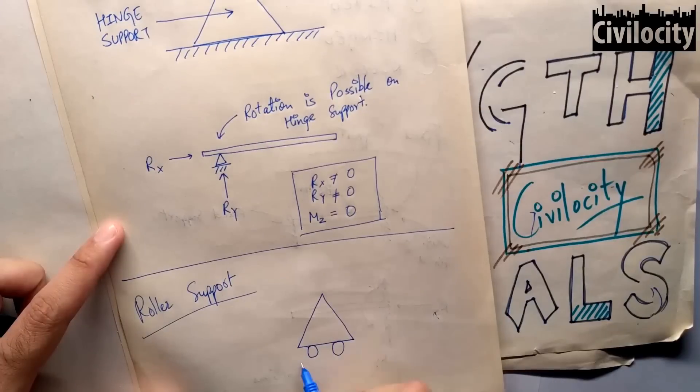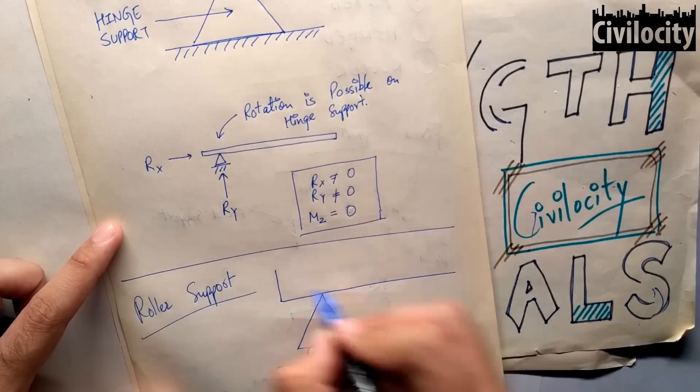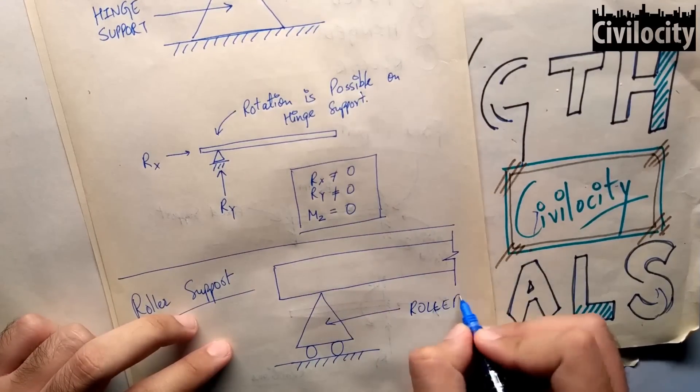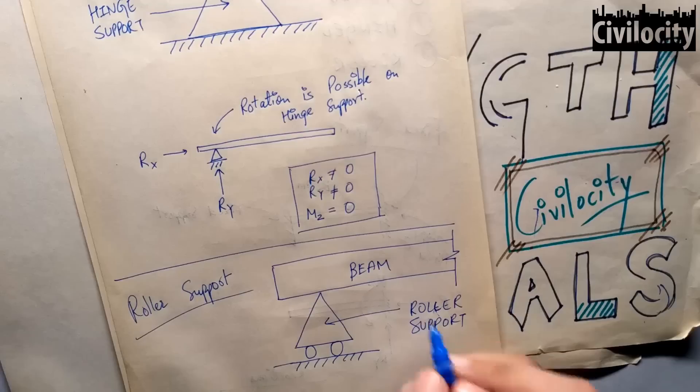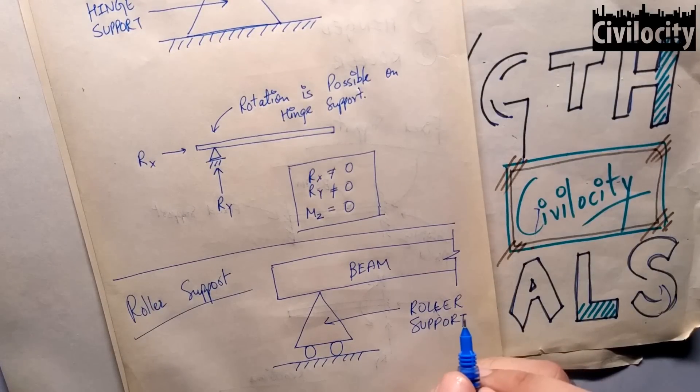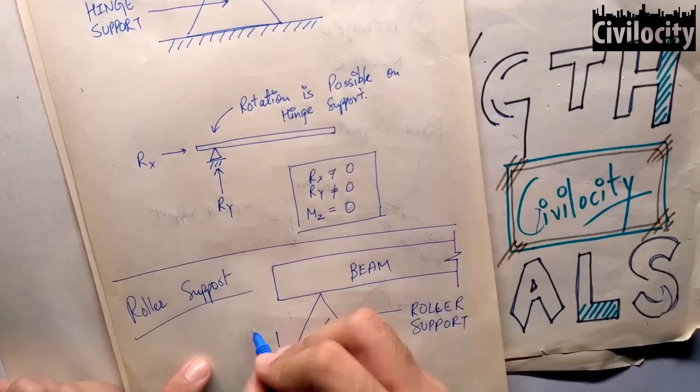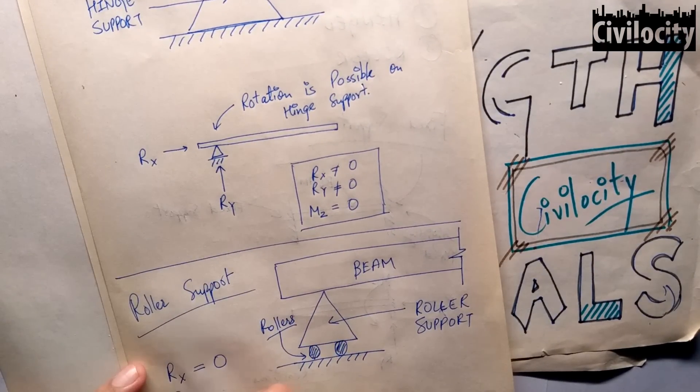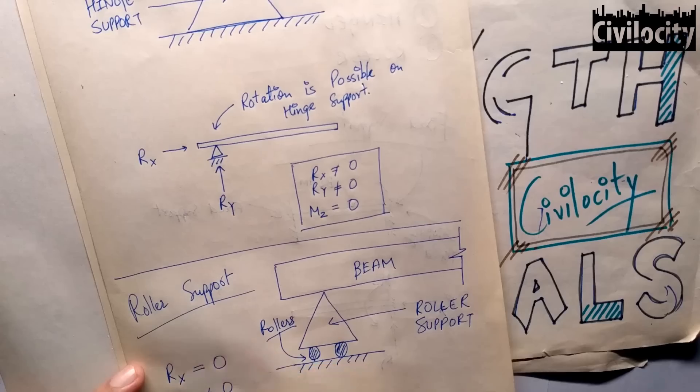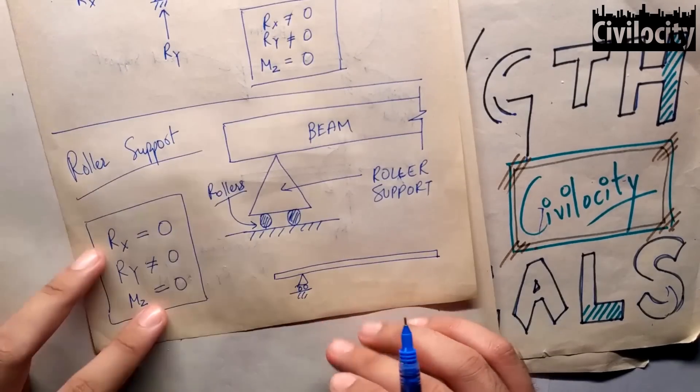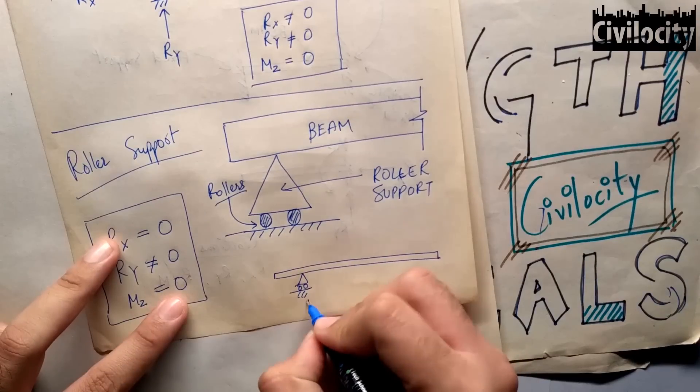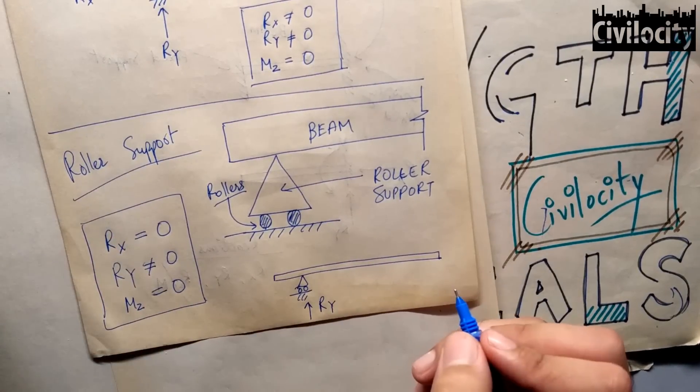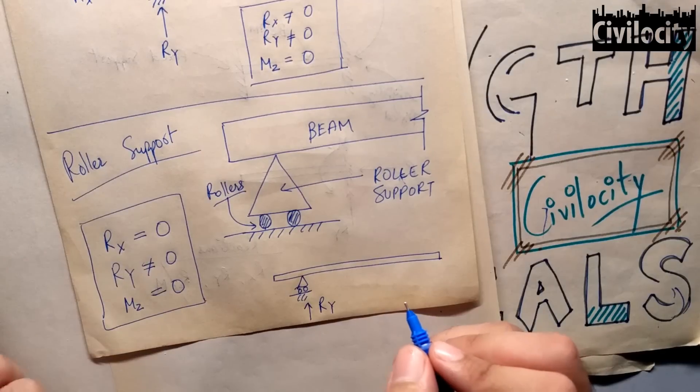Alright, to pichli lecture mein maine aapko bataya tha ki jo hinge support hota hai aur roller support hota hai, in dono supports pe jo rotation hai wo possible hota hai. Agar waha pe rotation possible hai, iska matlab koi resistance act nahin kar raha, us bending moment ko counteract karne ke liye. It means jo bending moment hai, waha pe zero hoga, because koi reactions wahi produce ho raha hai. Aur bending moment kya hota hai, wo reactions jo rotation ko counteract karne. Agar rotation waha pe possible ho raha hai, to koi force waha pe counteract nahin kar raha, iska matlab jo bending moment hai wo zero hai is position pe.